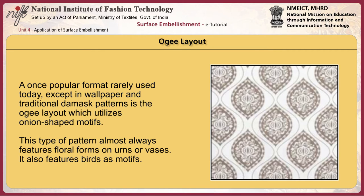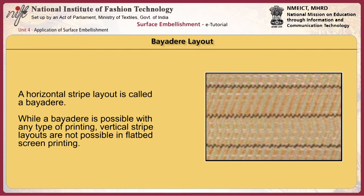A once-popular format, rarely used today except in wallpapers and traditional damask patterns, is the ogee layout, which utilizes onion-shaped motifs. This type of pattern almost always features floral forms on urns or vases and also features birds as motifs. A horizontal stripe layout is called a bayadère — this is not simply a geometrical stripe composed of straight lines but may feature any type of motif arranged in a horizontal format.